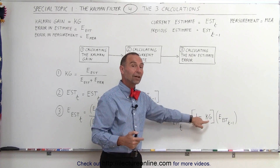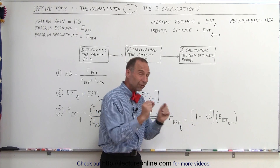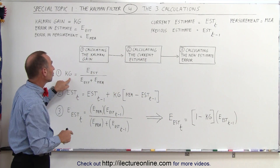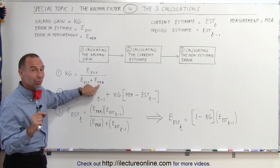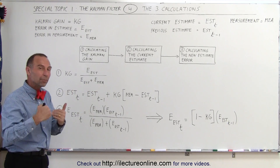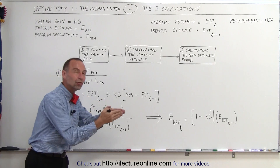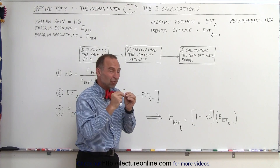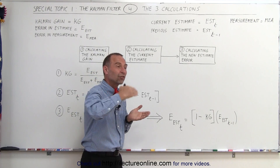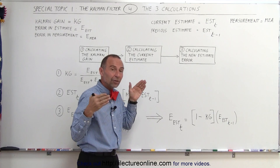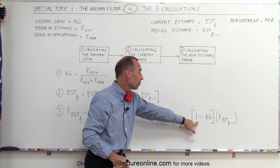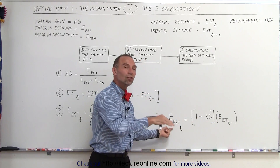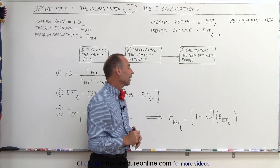If the Kalman gain is large, then 1 minus a number close to 1 gives us a very tiny multiplier. A large Kalman gain means the error in the measurement is very small, so new data can quickly get us to the true value. Therefore we reduce the error in the estimate rapidly — we will have small variations as new data comes in, and the error in the estimate will get small very quickly. We multiply the previous error by a very small number, very quickly reducing the error in the estimate.